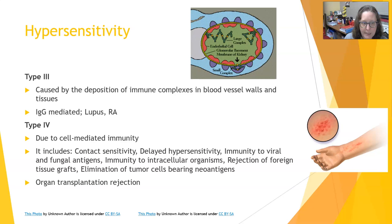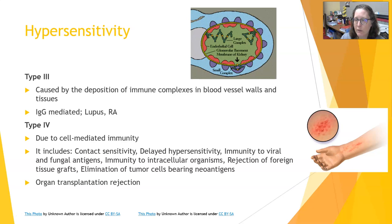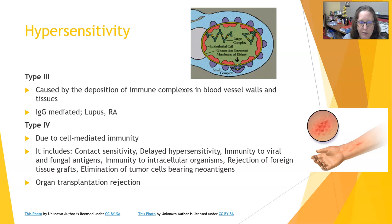Type 4 hypersensitivity is cell mediated — it is the only type not antibody mediated. It includes contact sensitivity such as poison ivy, poison oak, and nickel allergy. It is a delayed hypersensitivity reaction — with reactions like poison ivy or poison oak taking 24 to 48 hours to appear. Some food allergy reactions are also delayed in this way. Type 4 also covers immunity to viral and fungal antigens, and organ transplant rejection — where the recipient's immune system attacks donor cells — is a classic Type 4 cell mediated delayed immune reaction.